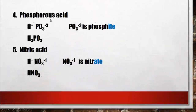We have two more examples. Phosphorous acid ends with '-ous acid,' so we look for the phosphorus-oxygen ion ending with '-ite' — that is phosphite, with the formula PO3-3. We attach this to hydrogen. Since the charges are not equal, we use the crossover method: 1 will be the subscript of phosphite, and 3 will be the subscript of hydrogen. The final formula is H3PO3.